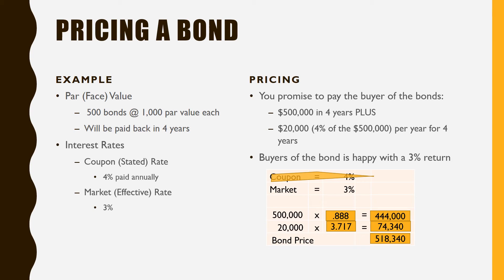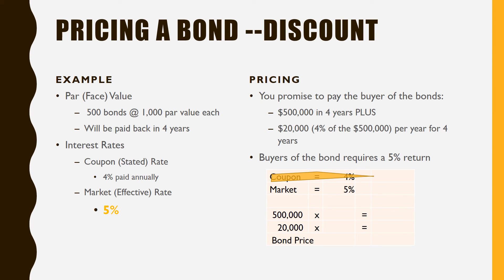The bond price comes out to $518,340. This makes sense — we're paying four percent coupon but the market is happy with three percent, so buyers give us a little extra, a premium. That's the first case. Now for a discount: the exact same problem, but the market rate is changed to five percent. Interest rates have gone up, so people now want five percent on their loans.